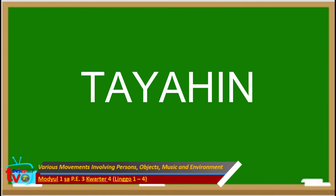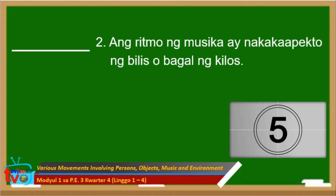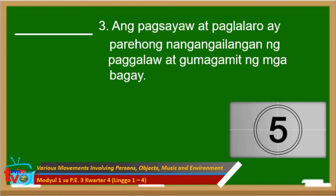Para sa tayahin, basahin ang bawat pangungusap ng maigi. Isulat ang tama kung wasto ang isinasaad nito at mali kung hindi wasto. Isulat ang sagot sa patlang na inilaan bago ang bawat bilang. Limang segundo ang pagsagot sa bawat tanong. Una, ang pagsayaw o pag-ihersisyo ay maaaring sabayan ng musika at dalawa o higit pang tao. Tama o mali? Ikalawa, ang ritmo ng musika ay nakakaapekto ng bilis o bagal ng kilos. Tama o mali? Ikatlo, ang pagsayaw at paglalaro ay parehong nangangailangan ng paggalaw at gumagamit ng mga bagay. Tama o mali?